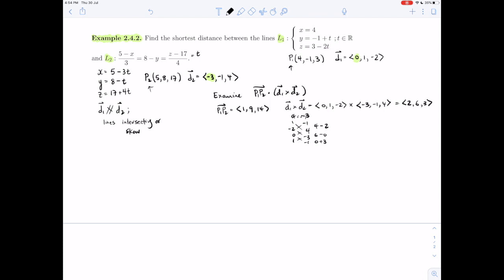So we want P1P2 dotted with D1 crossed with D2. So we will dot the entries of P1P2 with the entries of the cross product. And we are going to get 1 times 2 is 2, 9 times 6 is 54, plus 3 times 14, 42, so 96, 98.